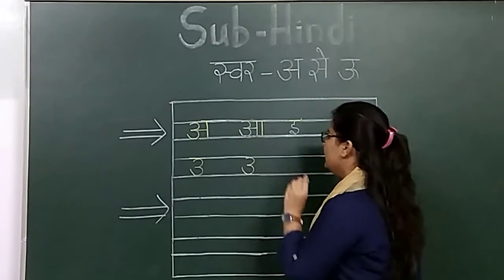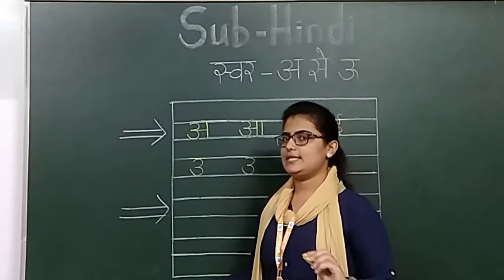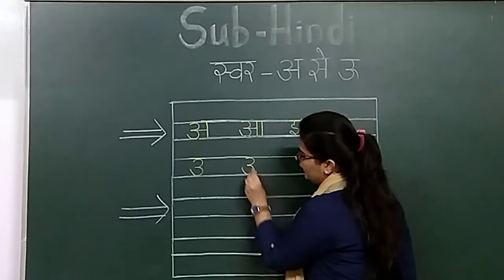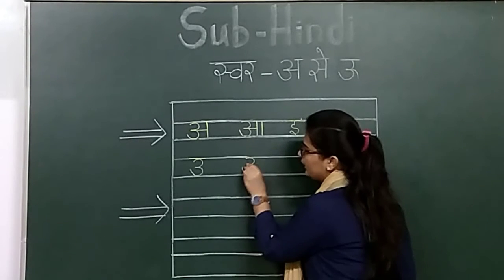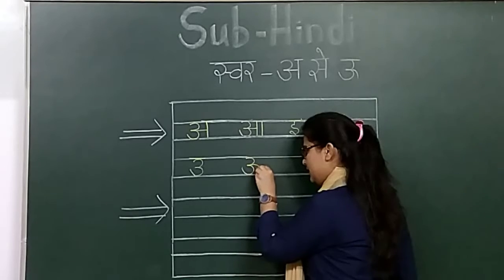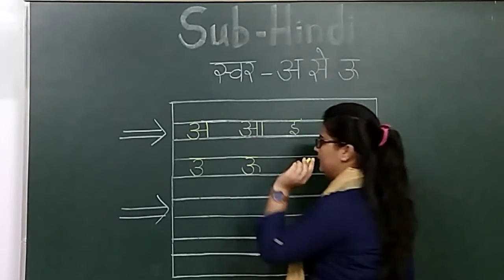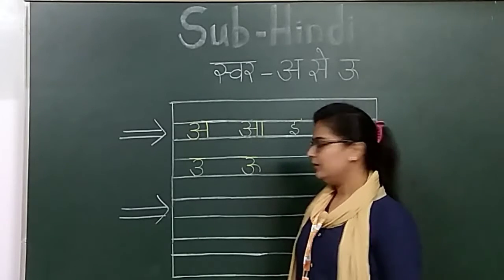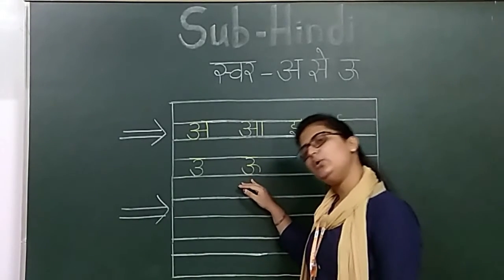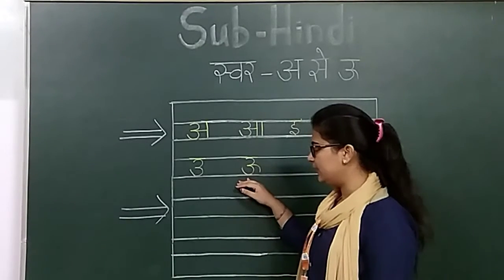Then here we make an extra hook, and it will become Badi U — U say Ullu. Badi U say Ullu. Okay.